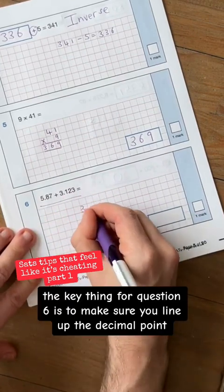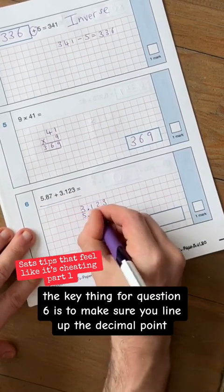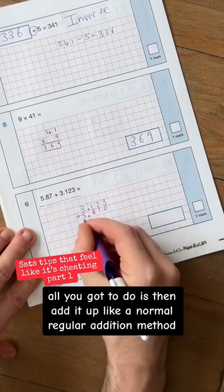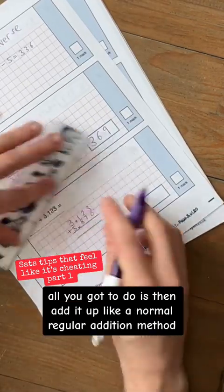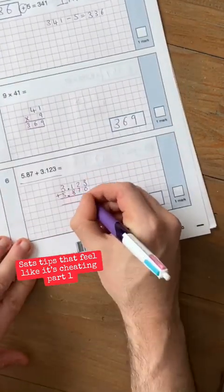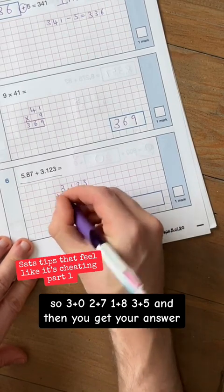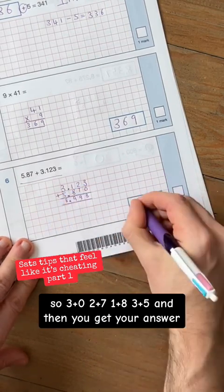The key thing for question six is to make sure you line up the decimal point. And once you do that, all you've got to do is then add it up like a normal, regular addition method. So 3 plus 0, 2 plus 7, 1 plus 8, 3 plus 5, and then you get your answer.